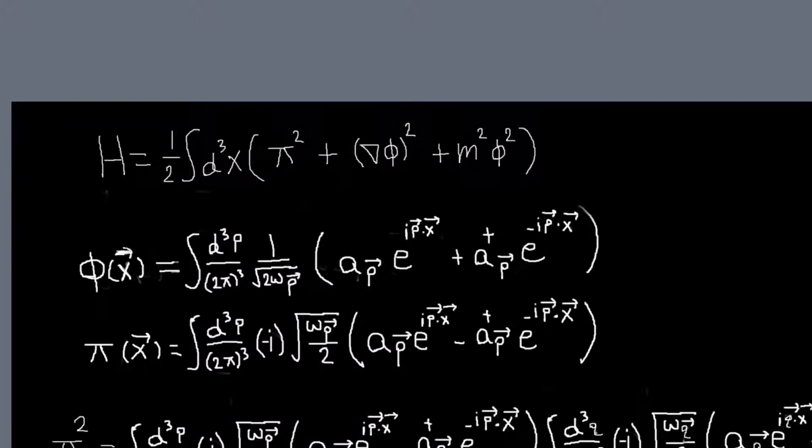Okay, so now that we have our expressions for phi, our field, and its conjugate momentum field in terms of the raising and lowering operators, or creation and annihilation operators, we need to find the Hamiltonian for our Klein-Gordon system here.